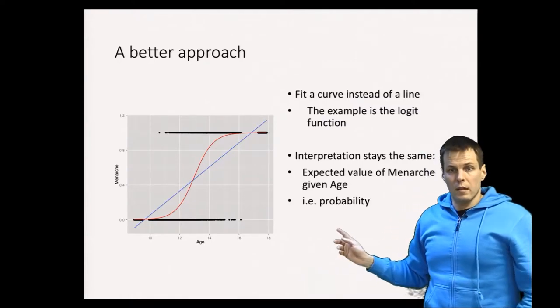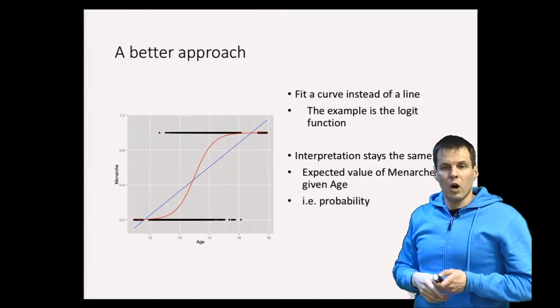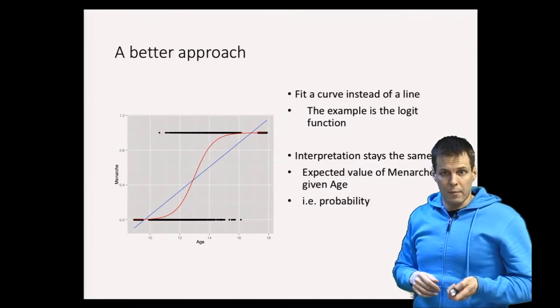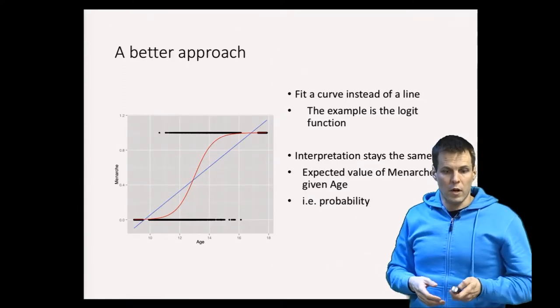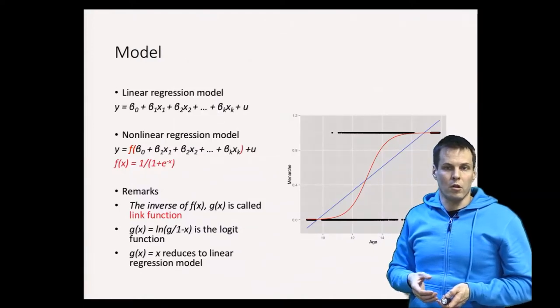So we get the probability of having had menarche given the age from the model. The model can be expressed mathematically because all models are just equations, and the mathematical expression for this logistic regression model is as follows.